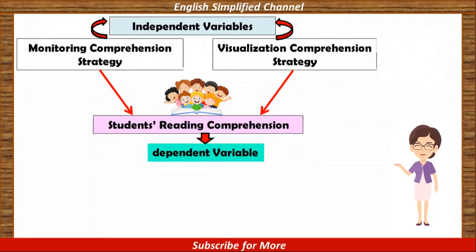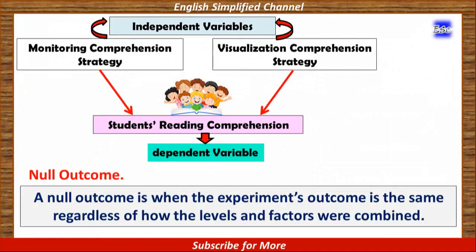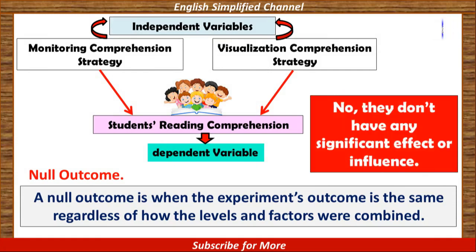Number 1: null outcome. A null outcome is when the experiment's outcome is the same, regardless of how the levels and factors were combined. In other words, based on this example, we hypothesize that visualization comprehension strategy and monitoring comprehension strategy have no effect on students' reading comprehension.